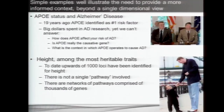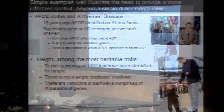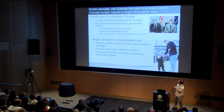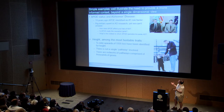The problem with that approach is highlighted by things like ApoE and Alzheimer's disease — something discovered 19 years ago — with a gazillion dollars spent on that and other pathways associated with AD to come up with new treatments. And after all that money spent, we still don't know how ApoE affects your risk of AD.